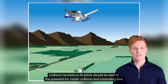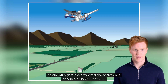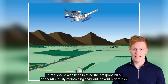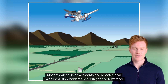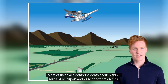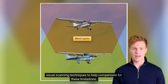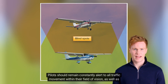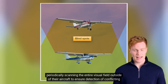All pilots should be alert to the potential for mid-air collision and impending loss of separation. This concept requires that vigilance shall be maintained at all times by each person operating an aircraft, regardless of whether the operation is conducted under IFR or VFR. Pilots should also keep in mind their responsibility for continuously maintaining a vigilant lookout, regardless of the type of aircraft being flown. Most mid-air collision accidents and reported near-mid-air collision incidents occur in good VFR weather conditions and during the hours of daylight, within five miles of an airport and/or near navigation aids. The see-and-avoid concept relies on knowledge of the limitations of the human eye and the use of proper visual scanning techniques. Pilots should remain constantly alert to all traffic movement within their field of vision, as well as periodically scanning the entire visual field outside of their aircraft to ensure detection of conflicting traffic.